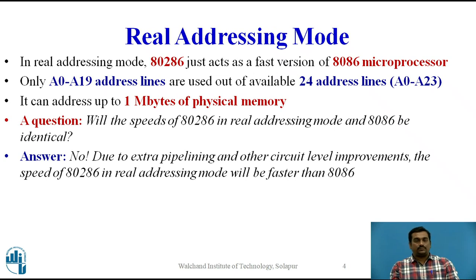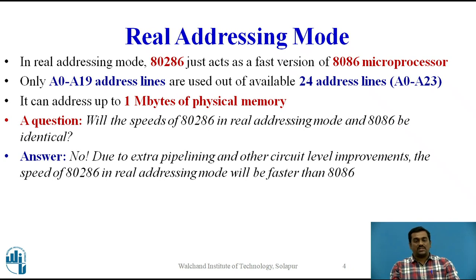In real addressing mode, the 80286 just acts as a fast version of the 8086 microprocessor. Only address lines A0 to A19 are used out of 24 address lines, so similar to the 8086 it can address up to 2 raised to 20, that is 1 megabyte of physical memory. The speed of 80286 in real addressing mode is not identical to the 8086 — due to extra pipelining and circuit-level improvements, it is roughly around 6 times faster.